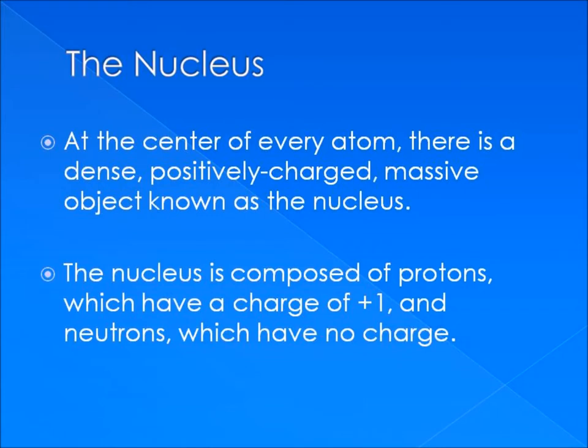We'll start with a basic description of the atom as we know it today. At the center of an atom, which is mostly empty space, there is a dense region of positive charge. This body is known as the atomic nucleus and houses the protons and neutrons, known collectively as nucleons. So how exactly did we find out about this nucleus, especially in the early 1900s when microscopes were so primitive by today's standards?